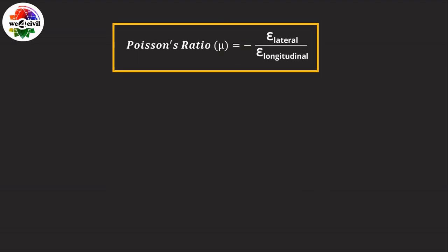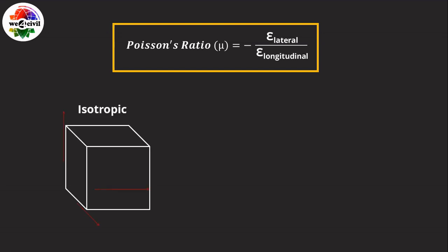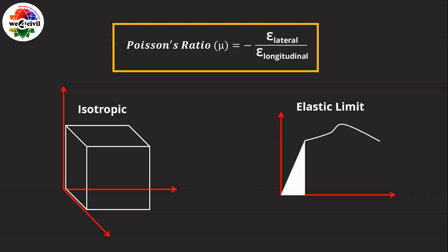Poisson's ratio is applicable to isotropic materials within the elastic limit only. For isotropic materials the property is the same in all directions, but for non-isotropic materials these properties may change with direction, so Poisson's ratio cannot be applied there. Similarly, above the elastic limit in the plastic state, the ratio of lateral to longitudinal strain is not constant, so we use another parameter called the contraction ratio instead.